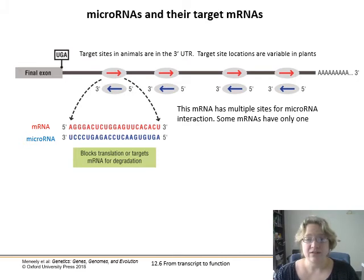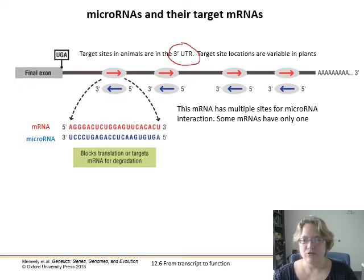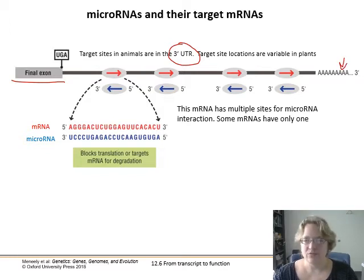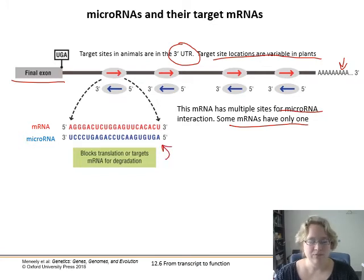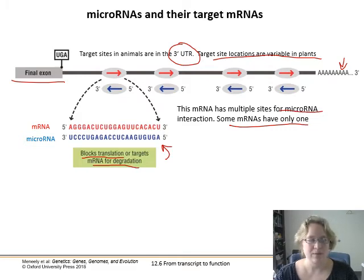MicroRNAs are really interesting because they actually target little spots on the messenger RNAs. In animals, they are targeting the 3 prime untranslated region — the gray area before the poly-A tail. We're only just learning about this over the past 5 to 10 years. Target sites are pretty variable in plants. Some messenger RNAs have multiple sites for microRNA interaction, some only have one site. What they do is match up to the mRNA, and then that blocks translation or targets the mRNA for degradation — they're like little tiny stop signs floating around.